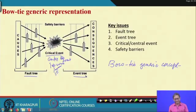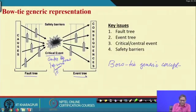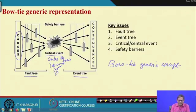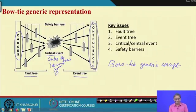For a center event or top event, if you have the fault tree, you can find out ultimately the root causes. And if you develop an event tree for that center event, ultimately you will find out the consequences.